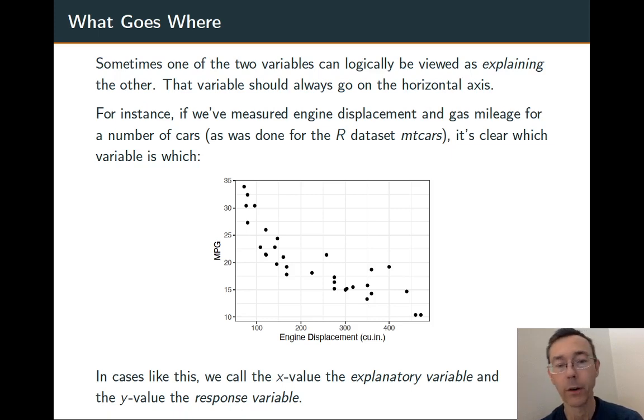We'll call that the explanatory variable. Similarly, the variable being explained should go on the vertical axis. We'll call that the response variable. For example, in the gas mileage example, it makes sense to view mileage as being explained by engine displacement. So we'll put mileage going vertically.